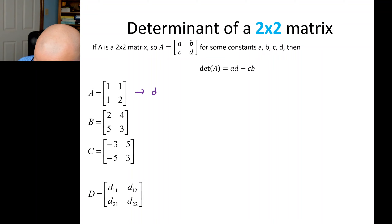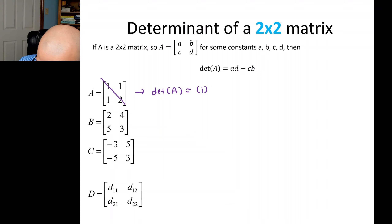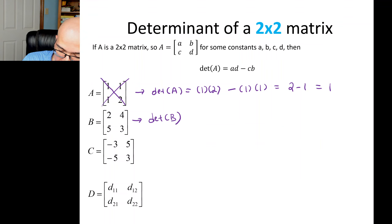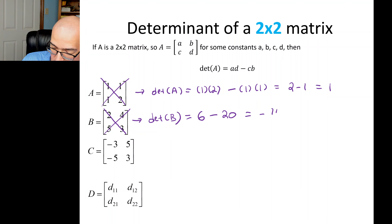The determinant of A is the down product 1 times 2, minus the up product 1 times 1, so 2 minus 1, which is 1. For the determinant of B, the down product is 2 times 3 = 6, minus the up product 4 times 5 = 20, giving negative 14.